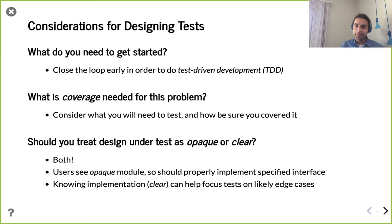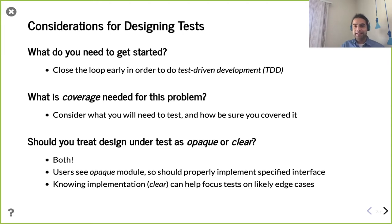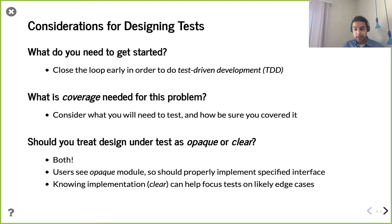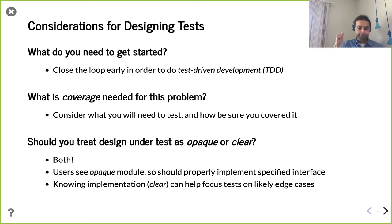Your user is seeing an opaque module — they just have an API and documentation. You should make sure there are tests that verify you live up to those expectations. At the same time, knowing the internals of your module can help you make better tests. With clear-box testing, knowing the implementation helps you recognize edge cases. There may be an untestably large number of cases, so you have to prioritize where you test, especially to make sure you get corner cases like overflow conditions.